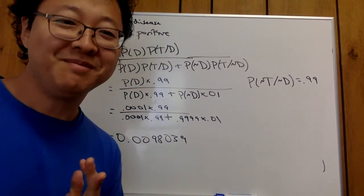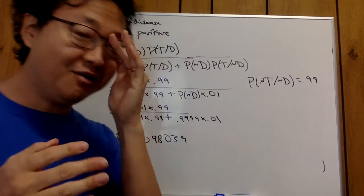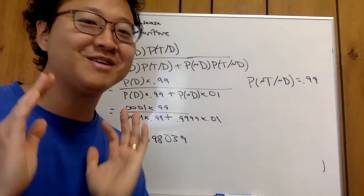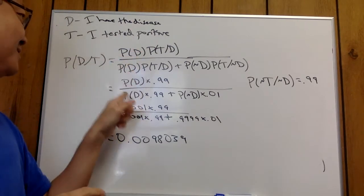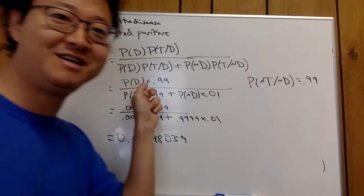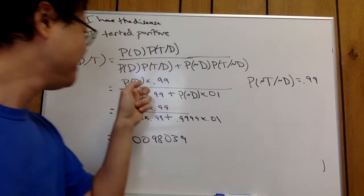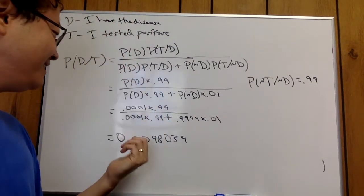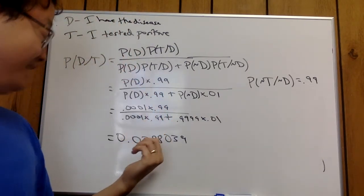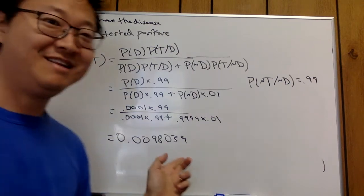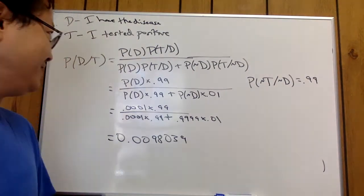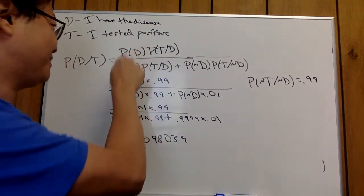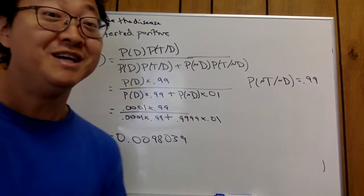What was the problem? People fail to incorporate the base rate — the prior probability — and that's why they make a mistake. People forget about prior probabilities.